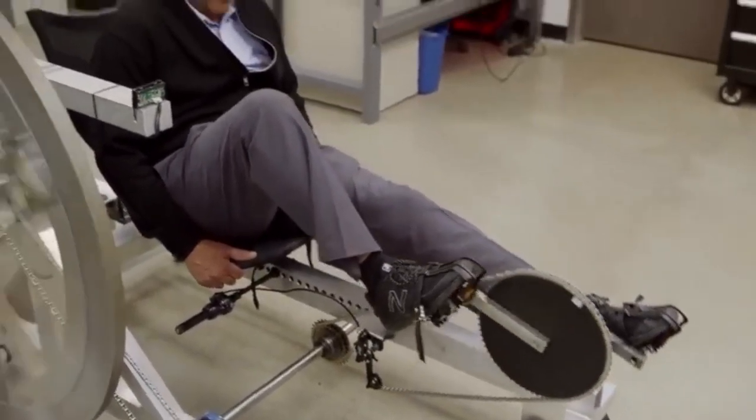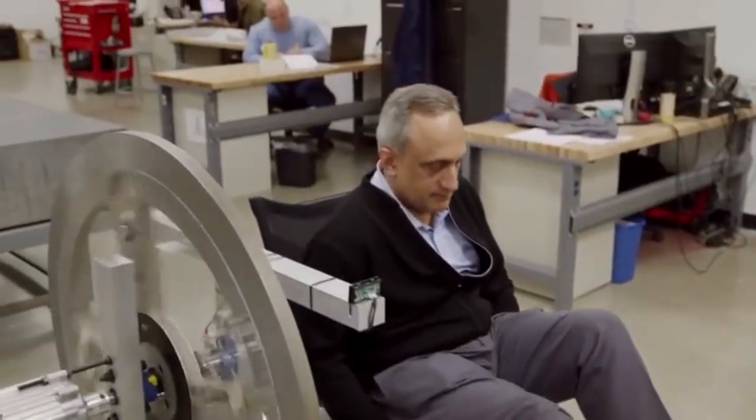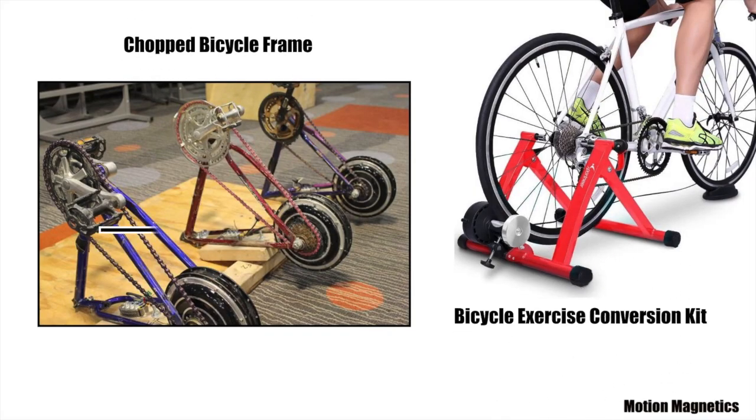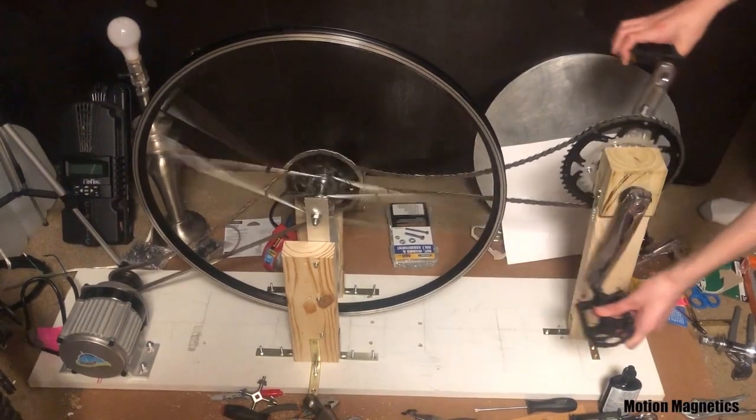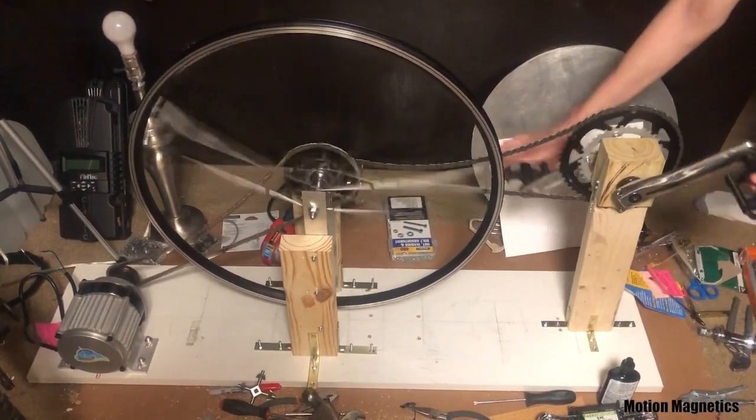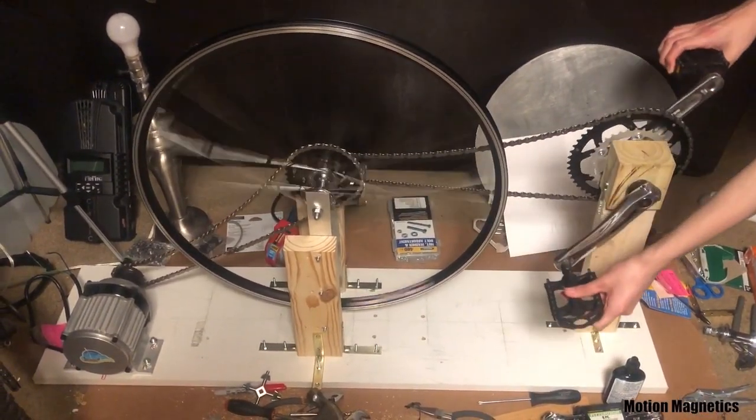Now back to the pedal generator. There are multiple versions of bicycle generators that you can find online that people have put together quite easily. In fact, if you want to keep it as basic as possible, you only need to chop a portion of an old bike or use an exercise conversion kit for your own bike, add an alternator, and presto, you have a bike or pedal generator. Of course, I rarely do things the easy way.